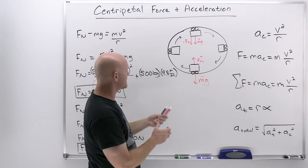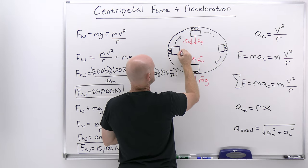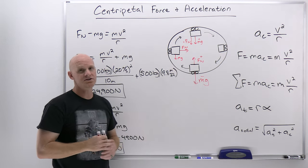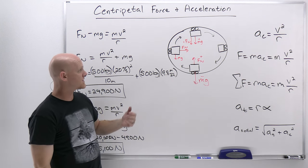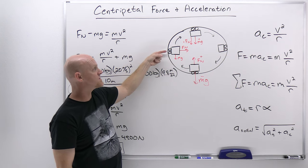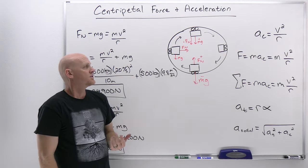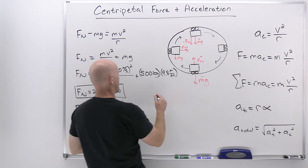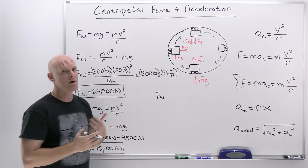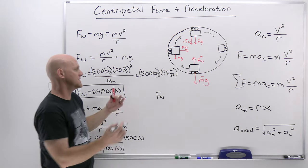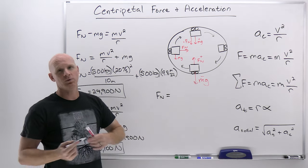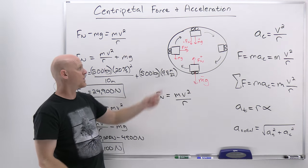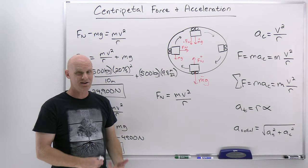Finally, we've got the sides of the loop. At the side, the normal force points toward the center horizontally, and the weight points straight down — they're in totally different dimensions. We can set up the net force in the direction toward the center of the circle: the only force there is the normal force. Gravity and weight are not in that part of the equation at all — it's the only force toward or away from the center. So N = mv²/r. We could also note the net force in the y-direction is just the weight.